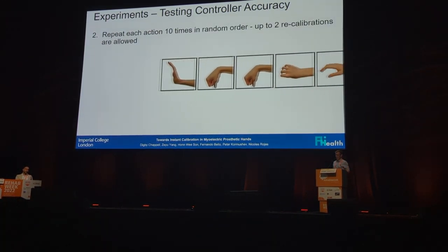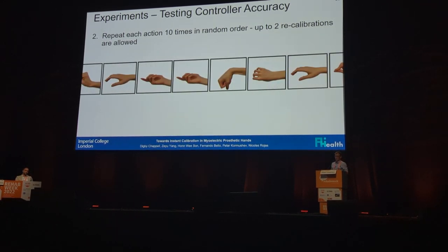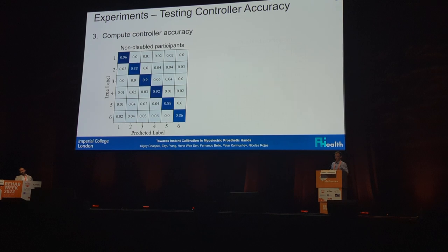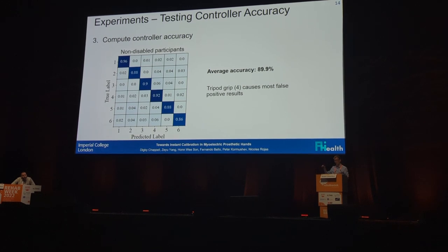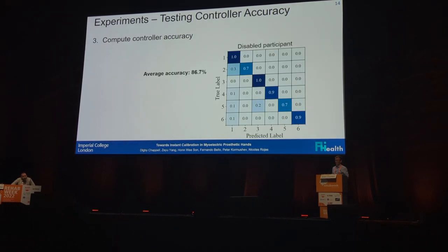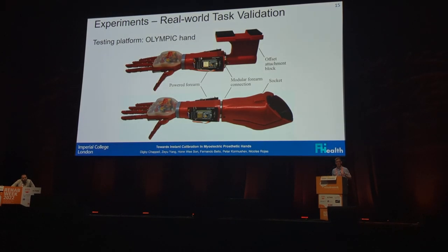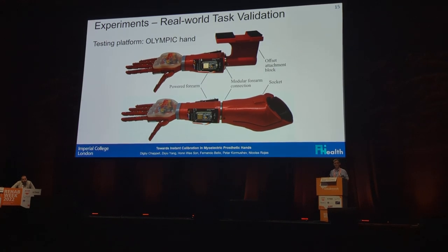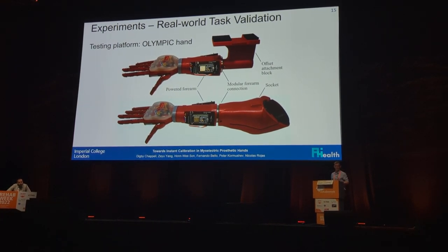We got them to repeat it 10 times in random order and allowed up to two recalibrations, then computed the accuracy of the controller. For non-disabled participants we got about 90% — tripod grip had the most false positives because it's a mixture of flexion and extension of fingers. For the disabled participant we got an accuracy of about 87%, with rest causing the most false positives due to muscle weakness. Most people would stop there and call that a good result, but we thought: let's check this in real life.